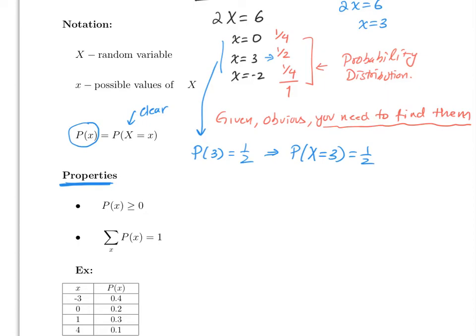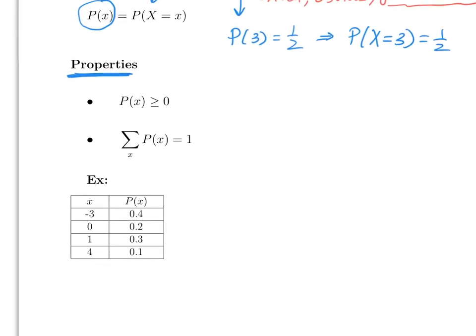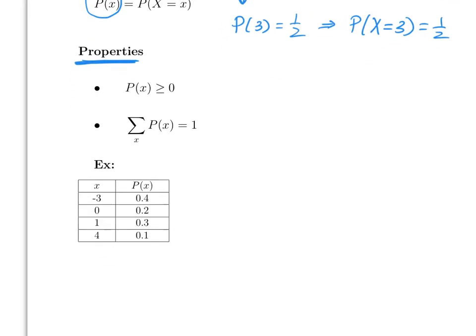Let's do an example where the values are just given to you. Here, all you have to do is check to see if it is a random variable. Notice that the x values can be positive or negative. All you have to check is that the probabilities add to 1, which in this case they do. So therefore, yes, this is a random variable.